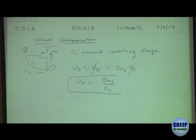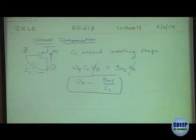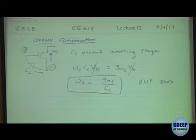That is the location of the zero, and this is positive — so it is a right-half-plane zero.